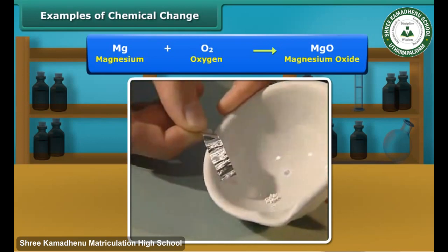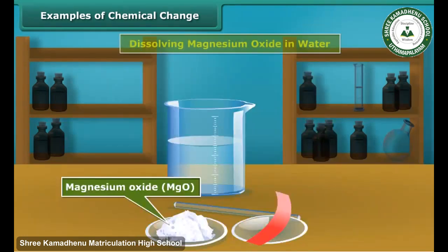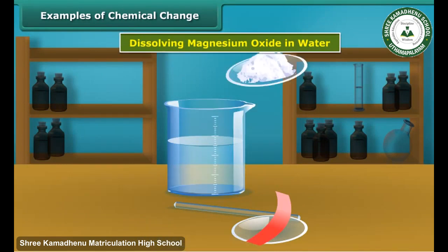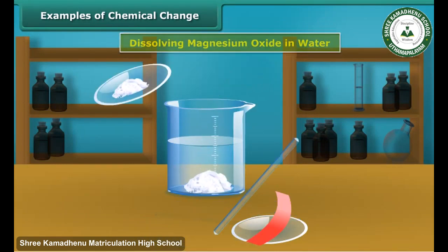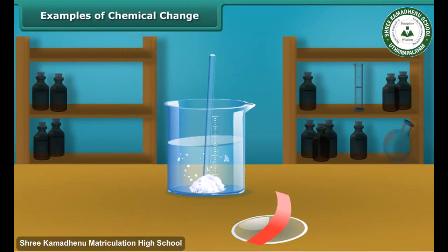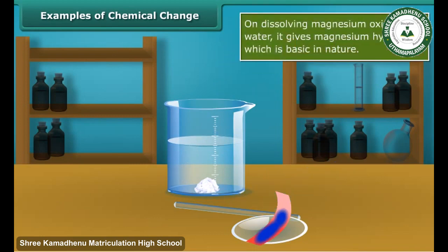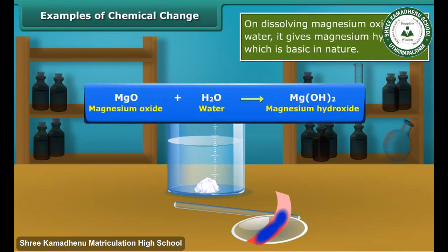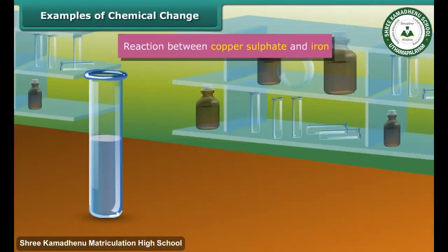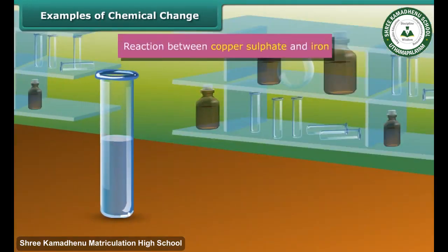Therefore, burning of magnesium is a chemical change. When magnesium oxide is dissolved in water, magnesium hydroxide is obtained, which turns red litmus blue. This suggests that magnesium hydroxide is basic in nature.